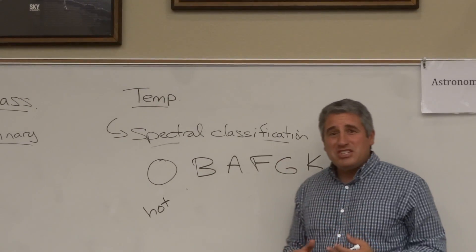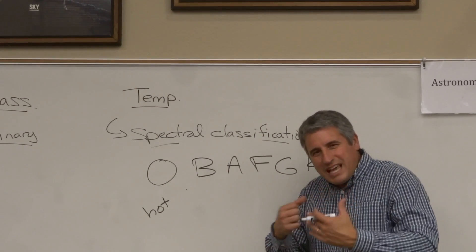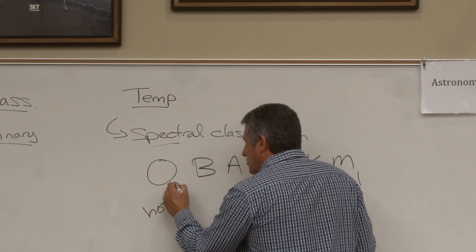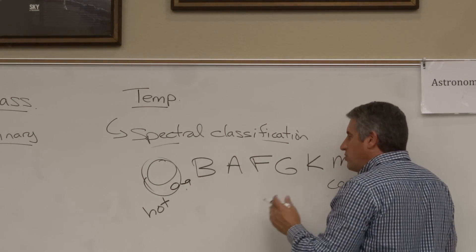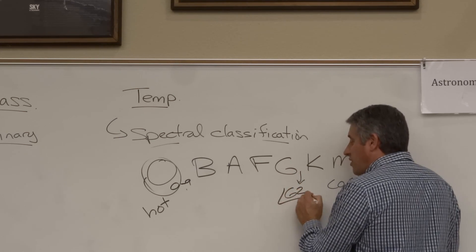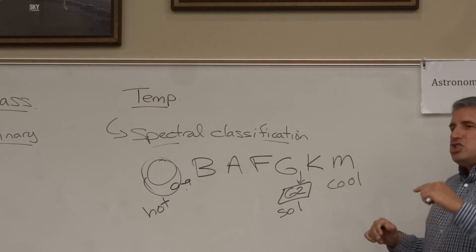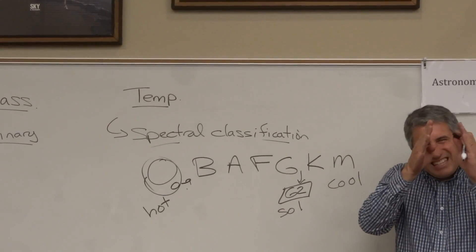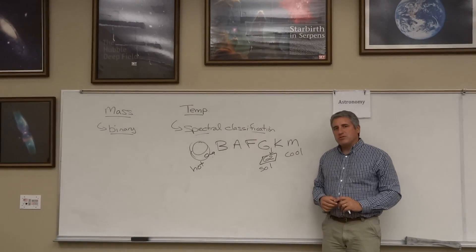Why not use A, B, C, D, E, F? Because those spectral line labels were already used by chemistry. Within each class is a zero-to-nine scale, so O0 is the hottest, down to O9. Our sun, the yellow sun, is a G2 star. She removed the need to take many pictures to figure out the exact color, thanks to this connection with spectral classification.